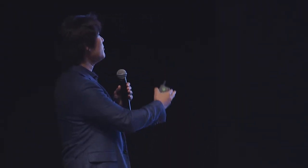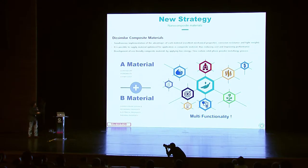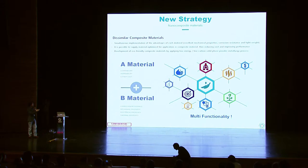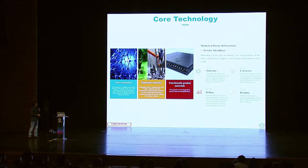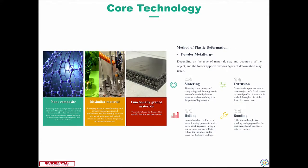We can consider, for example, material A and material B — whether the same metals, ceramics, hybridized, or polymers. We can combine those two materials in order to achieve multifunctionality at a reasonable price. There are several processing methods to achieve this kind of material.